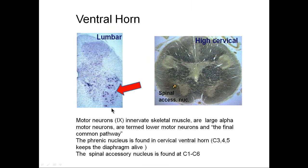The ventral horn cells or alpha motor neurons are where the corticospinal tract synapses — these are the cells of origin of the final common pathway and represent the lower motor neuron. Also in this area you find the spinal accessory nucleus, which innervates the trapezius and sternocleidomastoid, and the phrenic nucleus at C3, C4, C5, which keeps the diaphragm alive. These structures also receive cortical input.